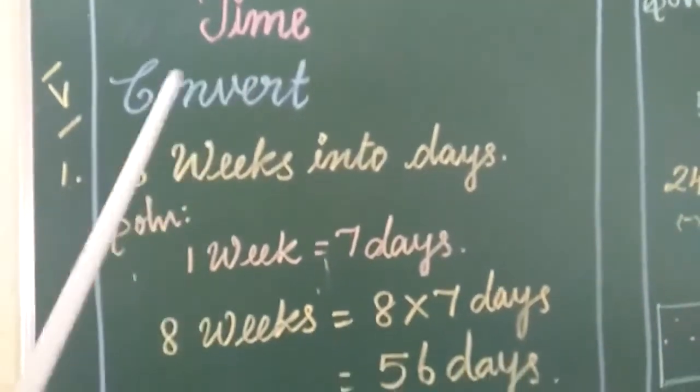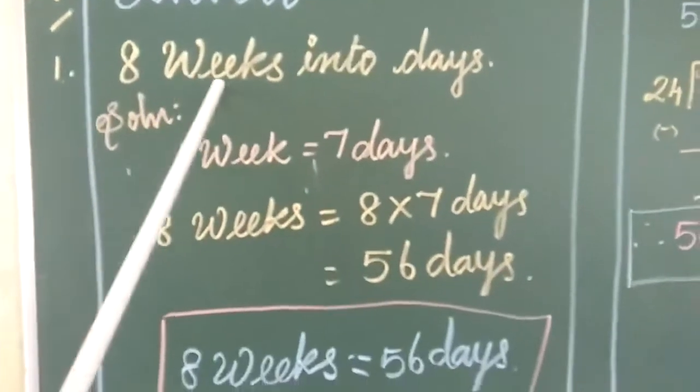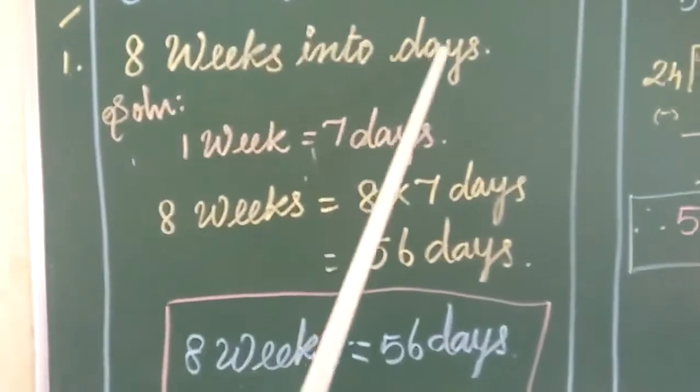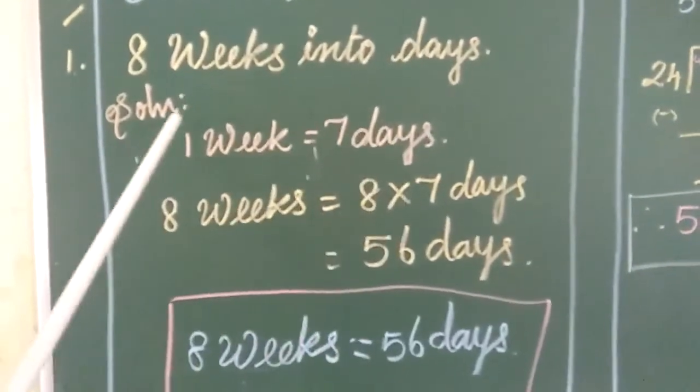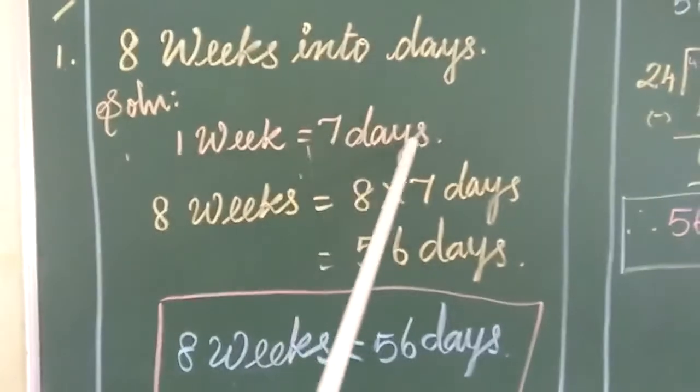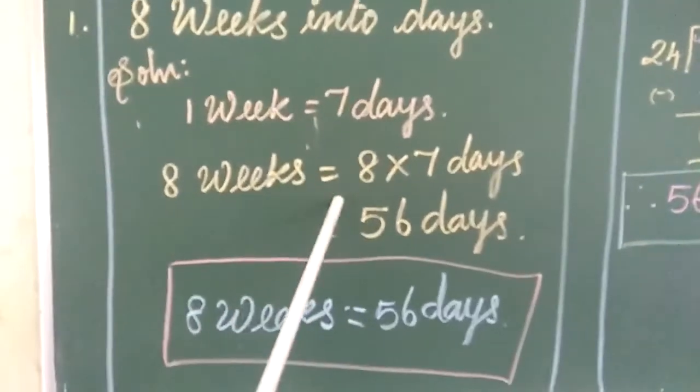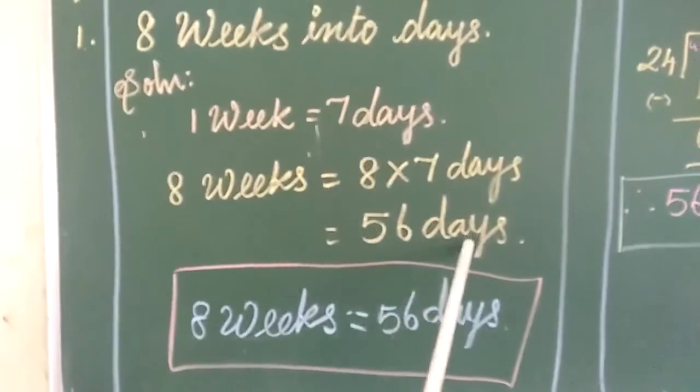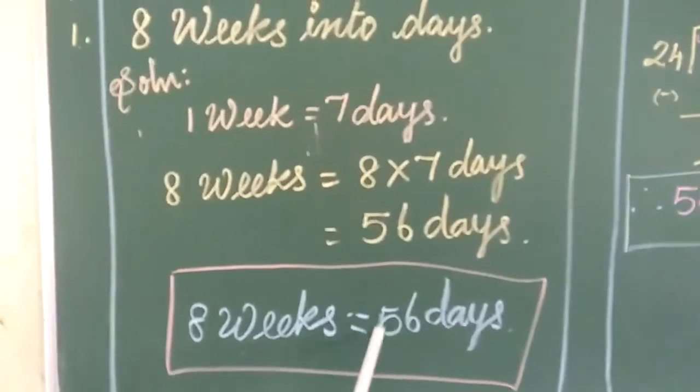Fifth Roman, convert. First one, 8 weeks into days. Big to small, we need to multiply. Solution: 1 week is equal to 7 days. So 8 weeks is equal to 8 into 7 days. 8 sevens are 56 days. Finally, 8 weeks is equal to 56 days.